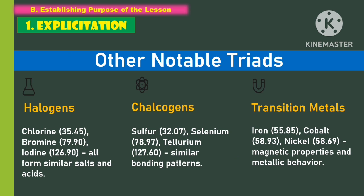Other notable triads include: the halogens — chlorine, bromine, and iodine — which all form similar salts and acids; the chalcogens — sulfur, selenium, and tellurium — with similar bonding patterns; and the transition metals — iron, cobalt, and nickel — which share magnetic properties and metallic behavior.